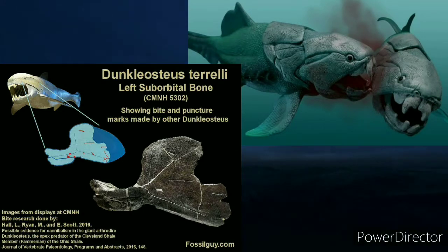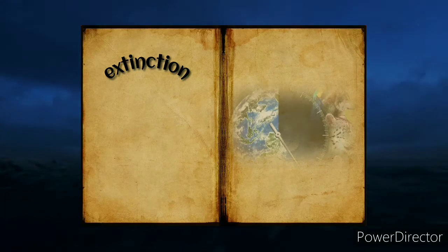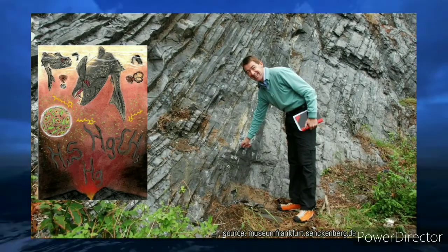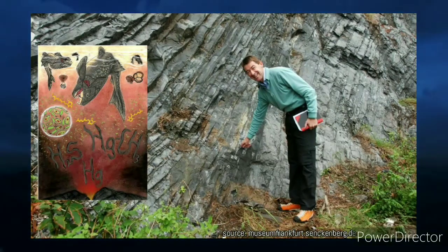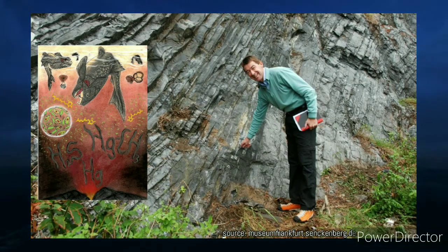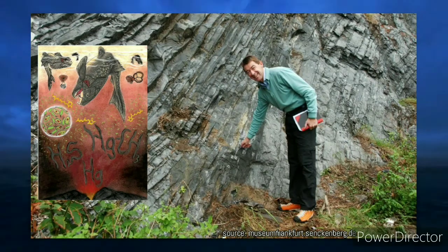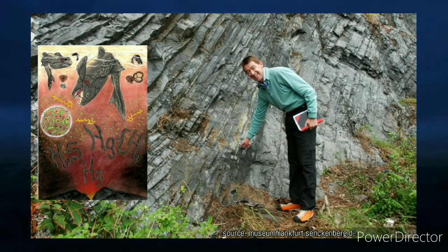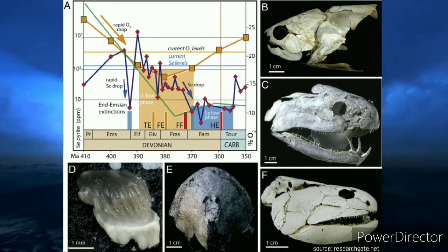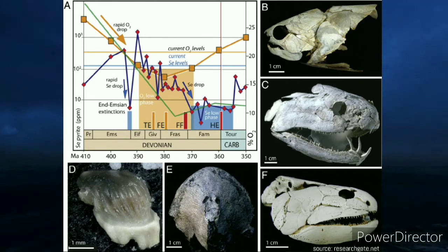It is believed that Dunkleosteus went extinct in the Hangenberg event, a mass extinction that occurred at the end of the Devonian period, at the end of the Famennian stage. Three quarters — 75 percent — of species on Earth and in water disappeared during this period. This event drastically decreased the oxygen level in the seas, and for a four-ton giant, surviving was a near-impossible task.